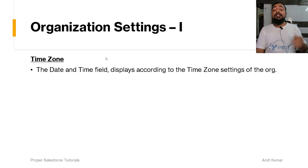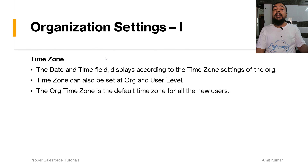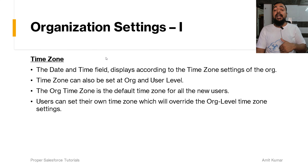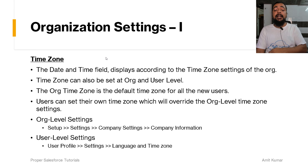The date and time fields display according to the time zone setting of the org. Time zone can also be set at the org and user level. The org time zone is the default for all new users, whereas a user can set their own time zone, which will override the org-level time zone. For org-level time zone, go to Setup, Company Settings, and the Company Information page. For user-level, click the profile icon, go to Settings, then Language and Time Zone.